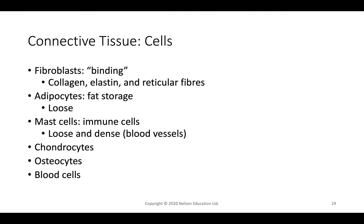Cells found in connective tissue include: fibroblasts, which bind cells together and produce collagen, elastin, and reticular fibers; adipose tissue (fat cells — white and brown); mast cells involved in immune response; chondrocytes found in cartilage and hyaluronic tissue; osteocytes found in bone; and blood cells found in circulation and produced in the bone marrow.